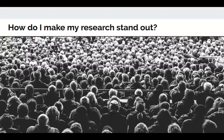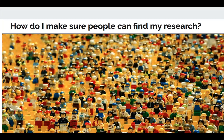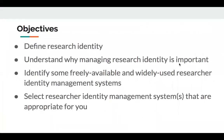These are some of the questions you might be asking yourself when thinking about this topic: How can you make your research stand out? How can you make sure people can find your research? And how can you make sure your research is attributed to you and not someone with a similar name? Research identity can help with all of these. Today we'll understand what research identity is and why managing it is important, look at some systems that can help, and hopefully find one or more that might be appropriate for you.